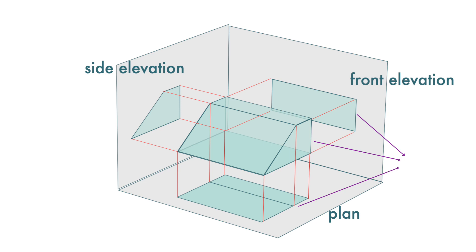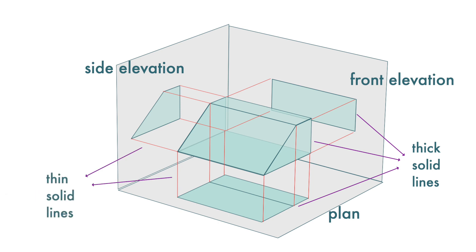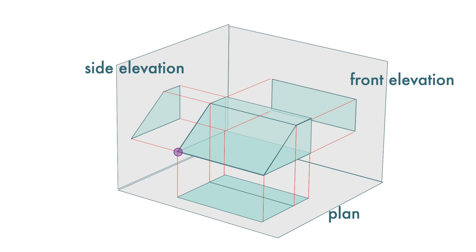All these are in thick solid lines. These are called projection lines and they are in thin solid lines. Note that these two corners are projected to the vertices here, and here we can use a thin line to join them up. These two corners are also projected to the vertices here and here, and we can use a thin line to join them up.